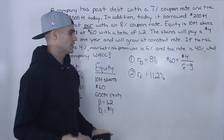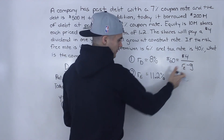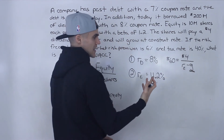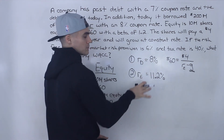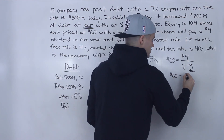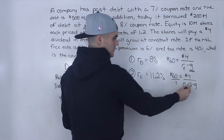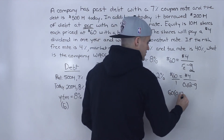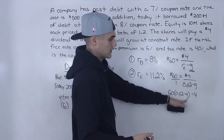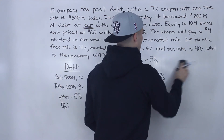An additional note about the Dividend Discount Model: what if the question asks for the growth rate of dividends? Now that we have the cost of equity of 11.2%, we could plug it in and solve for g. We don't have to do that in this question — that growth rate is not needed for the WACC calculation. But if we wanted to find it, we'd plug in 0.112, so 60 times (0.112 minus g) equals 4, divide both sides by 60, and solve for g.